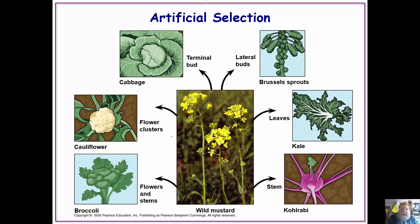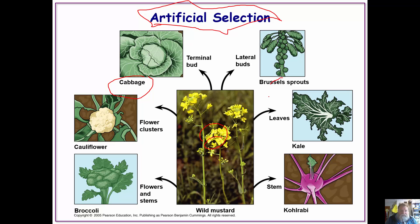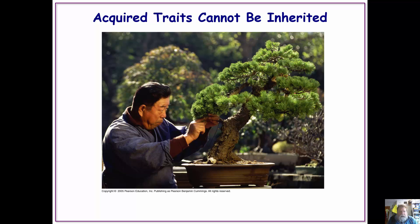Not only do we have natural selection, we also have artificial selection — human beings determining what populations reproduce. We see this with the wild mustard seed: many of our food organisms like Brussels sprouts, cauliflower, kohlrabi, and others are all descendants of the original mustard plant. This is a bit concerning because if a disease came through that wiped out mustard, it could probably wipe all of these out as well.